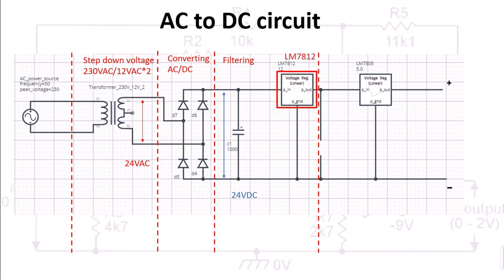In my circuit, I chose a step-down transformer from 230 volts to a pair of 12 volts. The secondary transformer connection has three terminals: 12 volt, 0, and 12 volt. I chose to connect to the two 12-volt terminals to get a 24-volt output. The 24-volt AC power output from the secondary transformer will pass through a full-wave bridge rectifier. When the AC voltage passes through the rectifier, the negative wave is eliminated, and 24-volt AC becomes 24-volt DC.